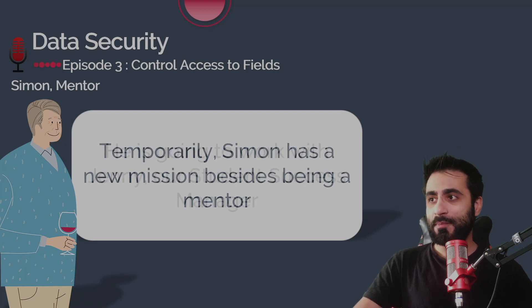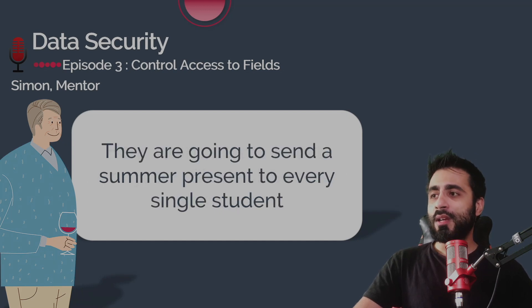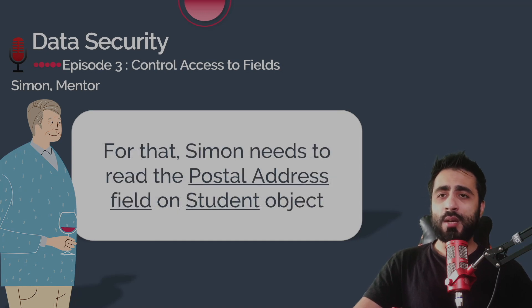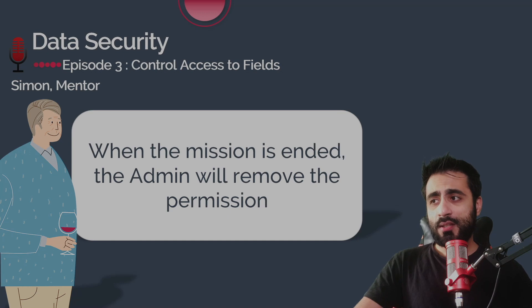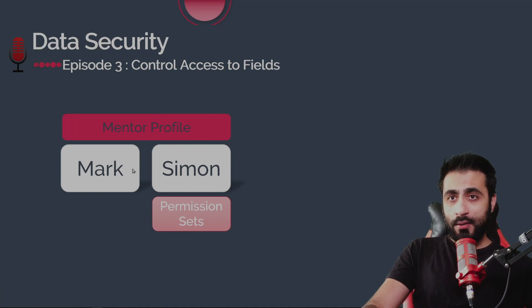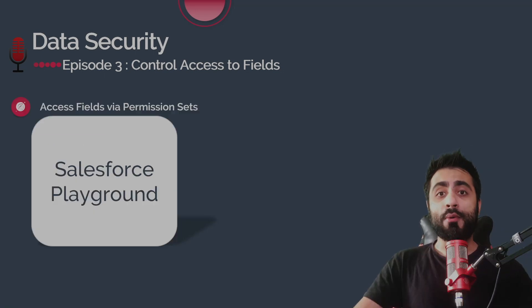Simon temporarily has a new mission — besides being a mentor, he is going to work with Jenny, our student success manager. They are going to send a summer present to every single student, so Simon needs to read the Postal Address field on the Student object. The admin will create a permission set with this access and assign it to Simon. When the mission is ended, we remove the permission set. Simon will have an extra read-only permission to access Postal Address on Student, in addition to his Mentor profile.